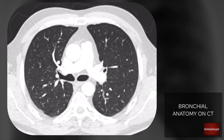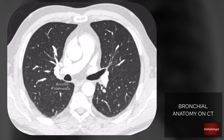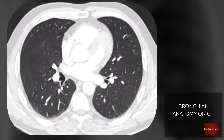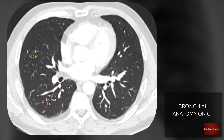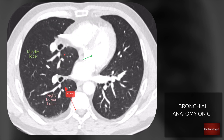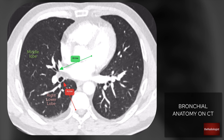Once that right upper lobe bronchus has come off, the airway is then called your bronchus intermedius. That's going to split into two: your middle lobe which goes anteriorly, and then your lower lobe which comes off posteriorly. So this here is your bronchus intermedius, and if we come down we can see your middle lobe airways coming off here and your right lower lobe airways coming off here.